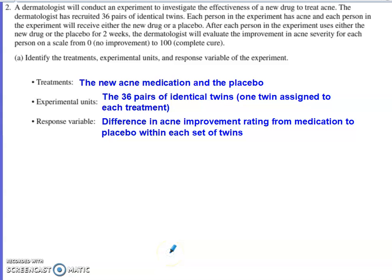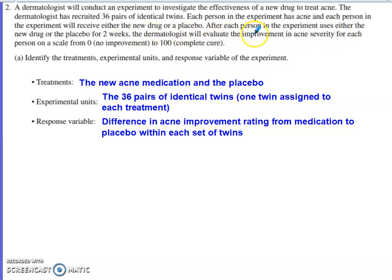This is problem number two from the 2022 AP Statistics exam, dealing with experimental design. A dermatologist is conducting an experiment to see how well a new acne medication performs. They recruit 36 pairs of identical twins — each person has acne and will receive either the new drug or a placebo. After two weeks, the dermatologist evaluates acne severity improvement on a scale from 0 to 100.